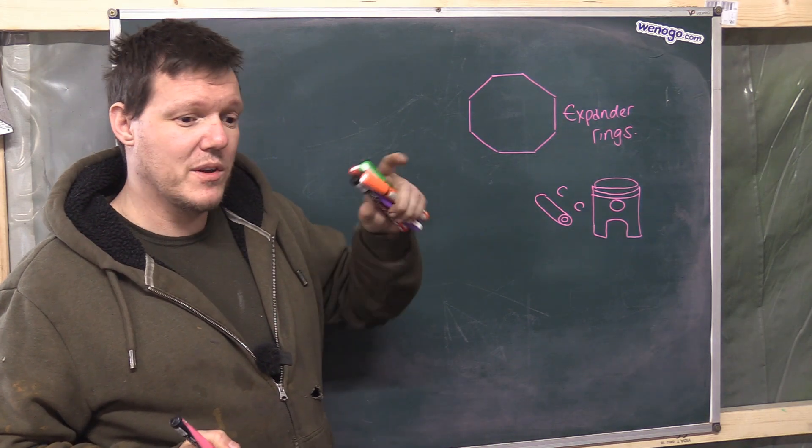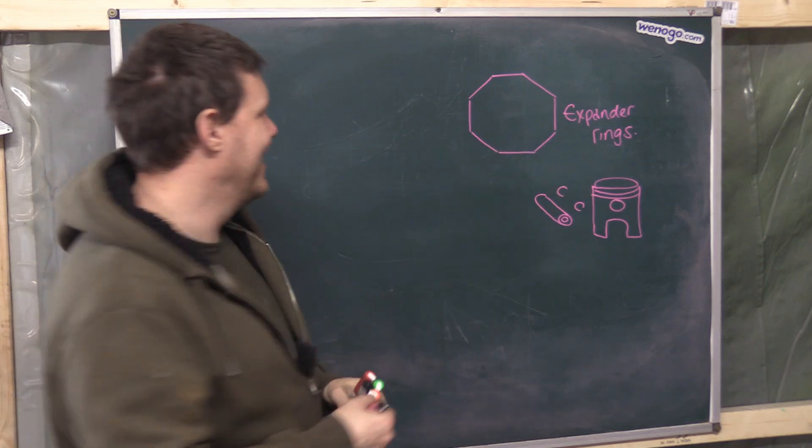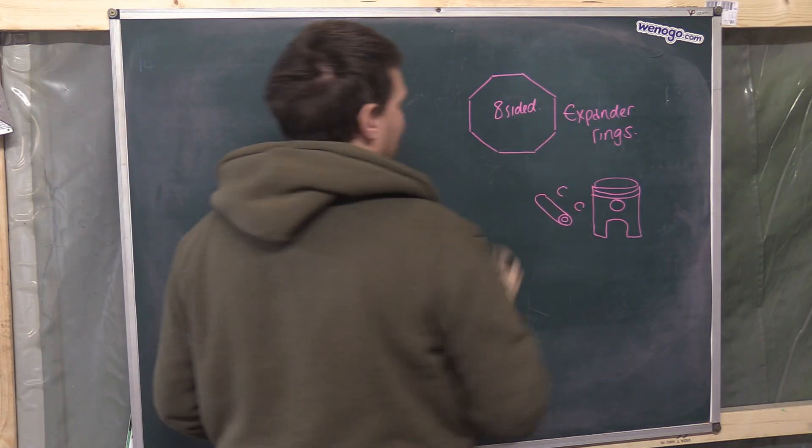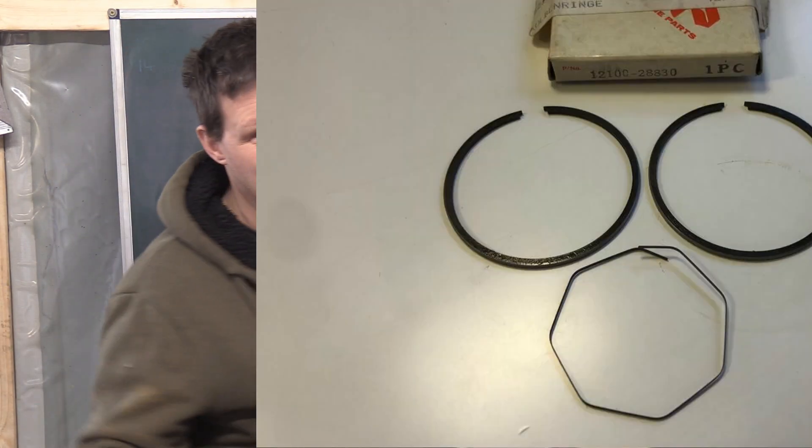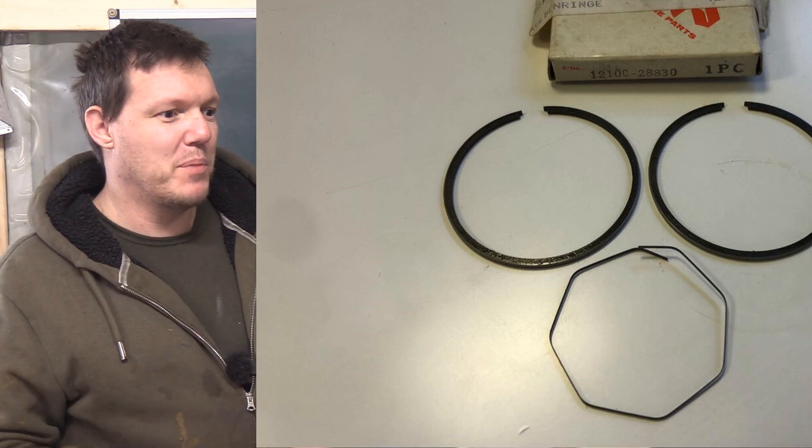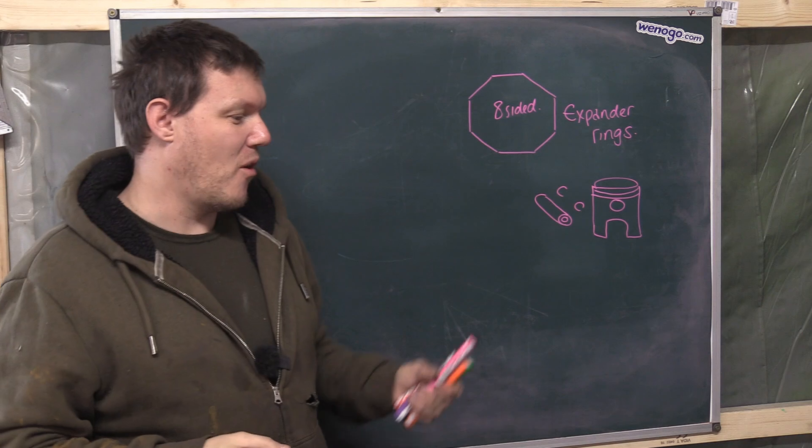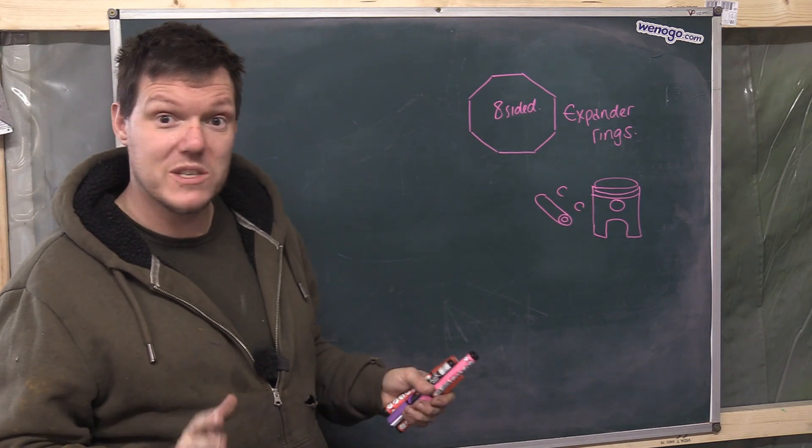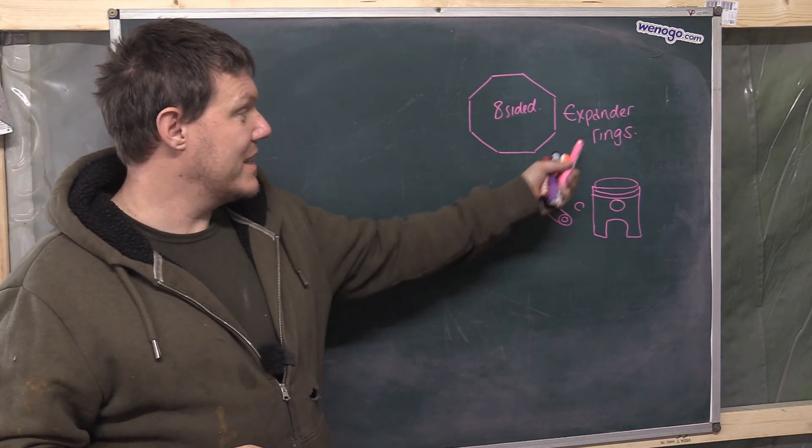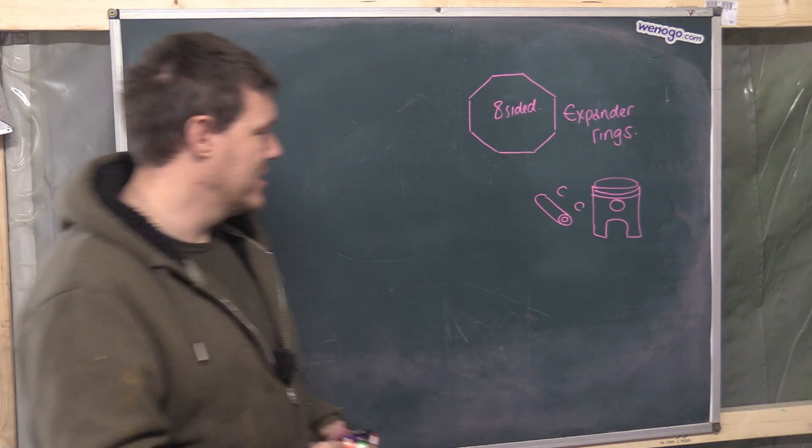You'll get a wrist pin, you'll get some clips or whatever in this kit. And in the little box that you get with your piston rings, you'll get this octagonal, this eight-sided ring with a gap in it somewhere. And I've seen posts over the years of people holding up this ring and saying, what is this, what is it for?